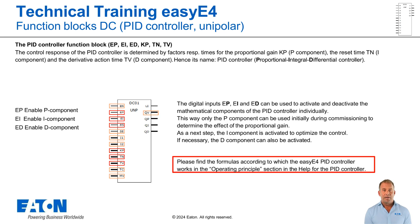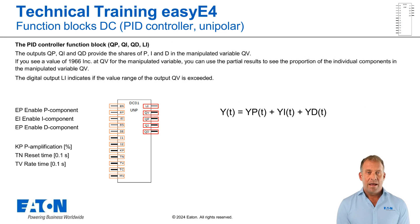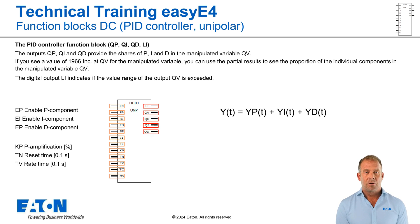The P, I and D components of the control algorithm can be enabled separately by the program using the EP, EI and ED inputs. At the analogue inputs KP, TN and TV, enter the values for the proportional gain, reset time and rate time — these determine the control response. In this way you can switch the parameters on and off individually to commission your control system. The analogue outputs QP, QI and QD provide the values for the P, I and D components of the manipulated variable QV. These values allow the controller settings to be evaluated during commissioning. The sum of all sub-results produces the manipulated variable QV of the PID controller, and these outputs are to be used for diagnostic purposes.